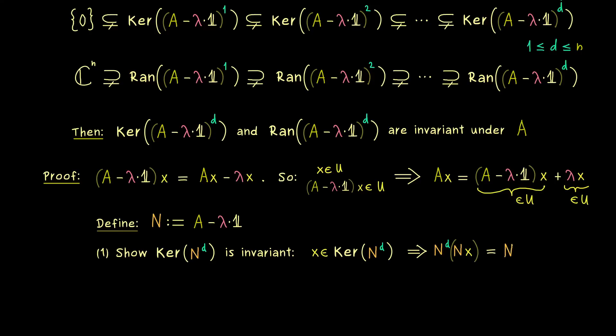Because we can rewrite it as N applied to N to the power d times x. And for this one, we already know it lies in the kernel, so this one is already the zero vector. And then applying N to the zero vector lets us stay at the zero vector. So the result is not so surprising: N times x also lies in the kernel.